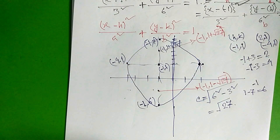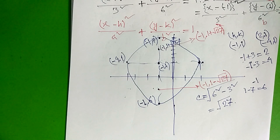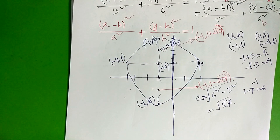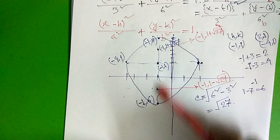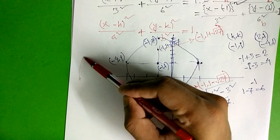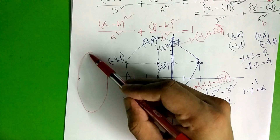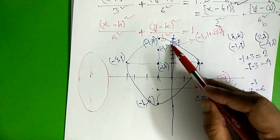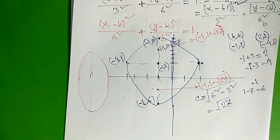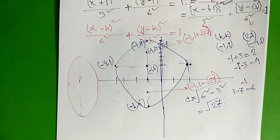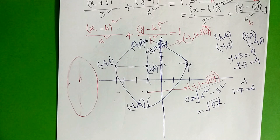Now we have drawn it. We are clearing this math and it is clear that we have drawn the ellipse. When we practice this, we are clear about this. We have seen this example at lecture 37 in general form. We are clear about this configuration.